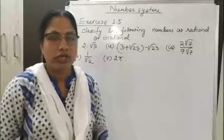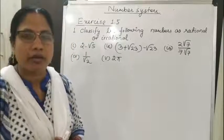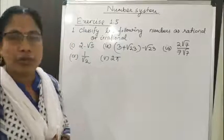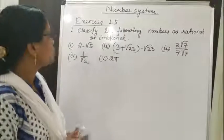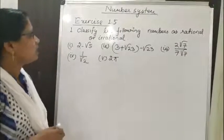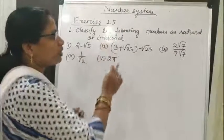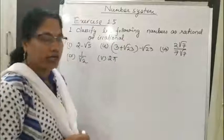Students, let us discuss Exercise 1.5 of the chapter Number System. Question number 1 is: classify the following numbers as rational or irrational.